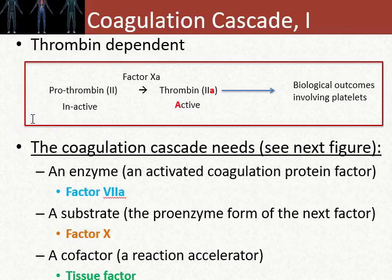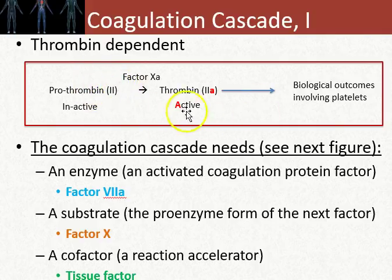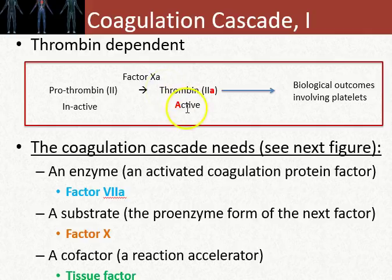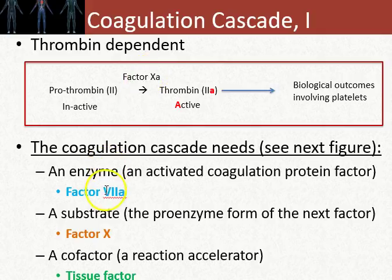The coagulation cascade is really complicated when you first learn it, but it actually makes more sense when you apply the drugs to it. When looking at the coagulation cascade, essentially you have a Roman numeral factor, and then it gets converted into Roman numeral A — where A is active. For example, prothrombin is factor II, and thrombin, which is biologically active, is factor IIa. The way prothrombin gets activated to thrombin is through another factor. In the coagulation cascade, one factor activates the other, and that's why it's called a cascade.